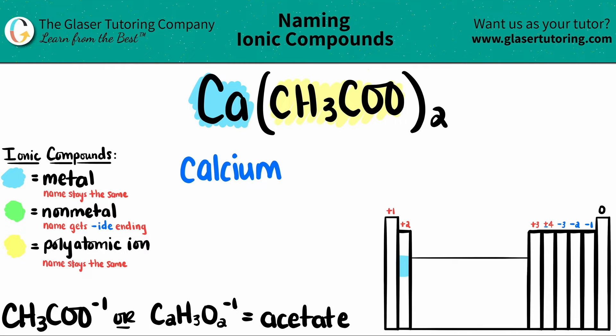Since we're dealing with a polyatomic ion, the polyatomic name always stays the same. Since this is acetate, it remains acetate.